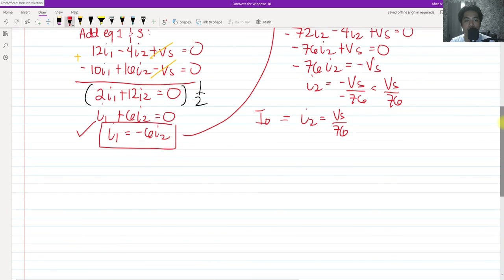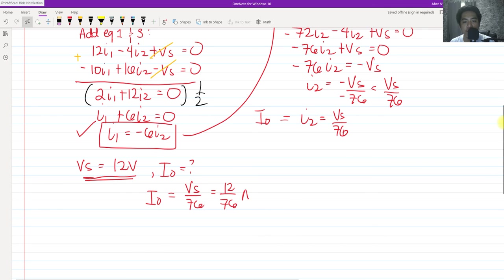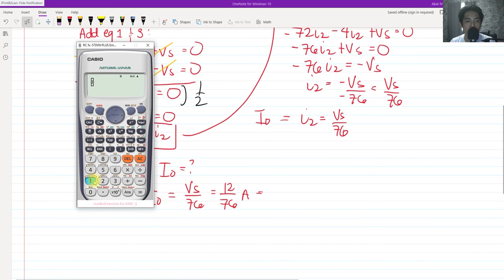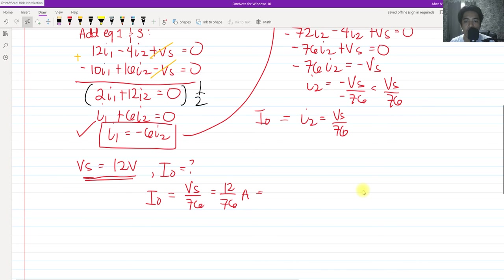Now, if we are going to substitute, we have two conditions. When V sub S equals 12 volts, what will be the I sub O? The I sub O would be V sub S all over 76, that is 12 all over 76 amperes. If we're going to calculate it, 12 all over 76, that would be 0.158 amperes, rounded to three decimals.